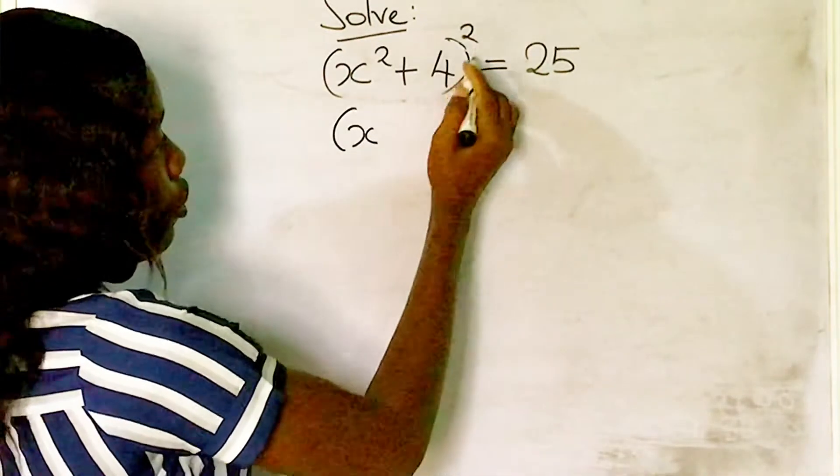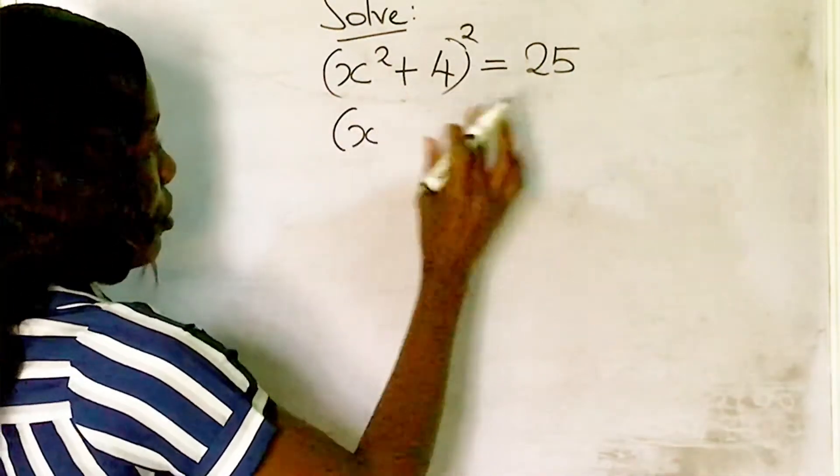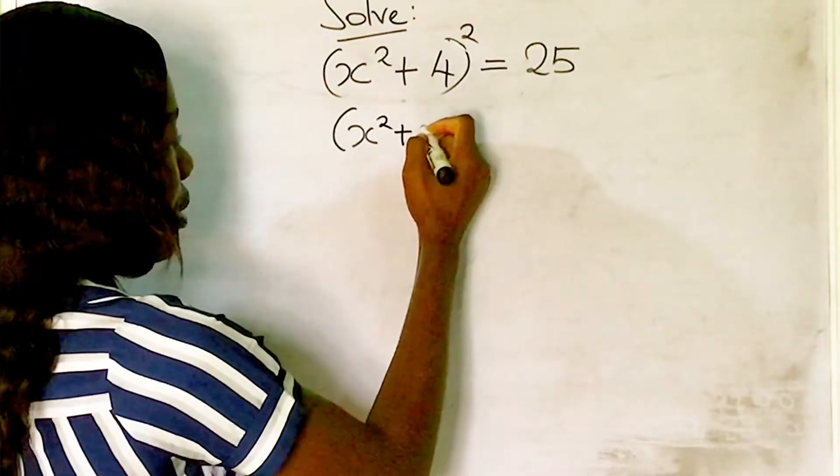To solve this, we'll remove the square on the left-hand side and balance the two sides out.